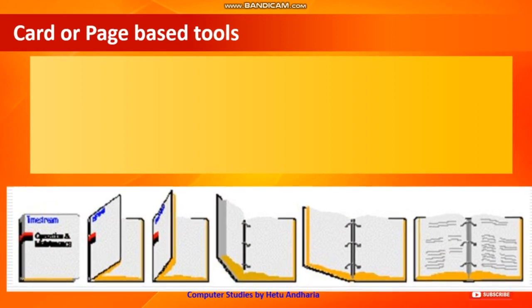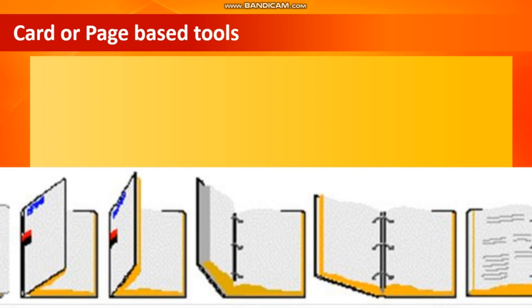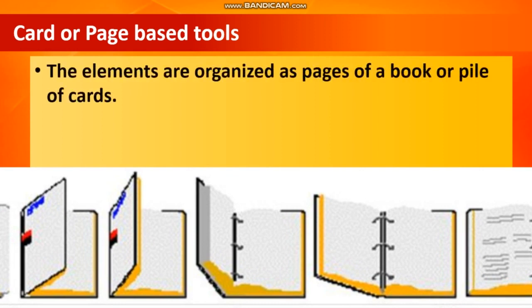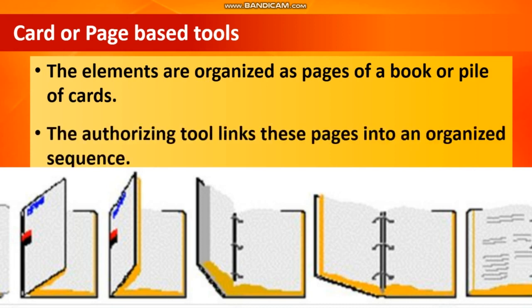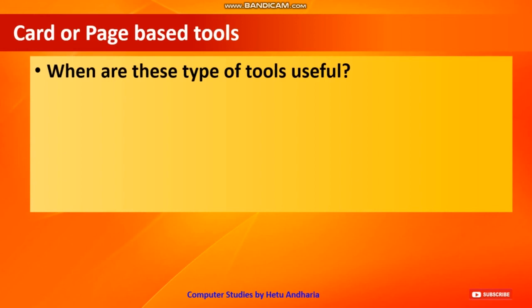In card or page-based tools, elements are organized as pages of a book or a pile of cards. The authoring tool links these pages into an organized sequence. We can compare it to a PDF of a textbook, where one after another you see content on different pages — that is a type of card-based tool.